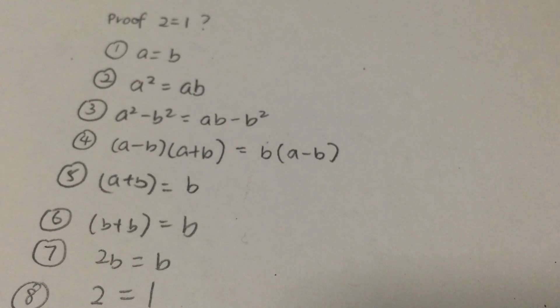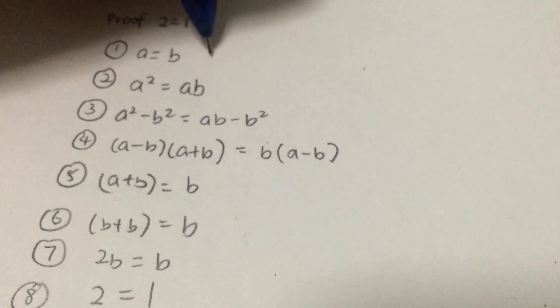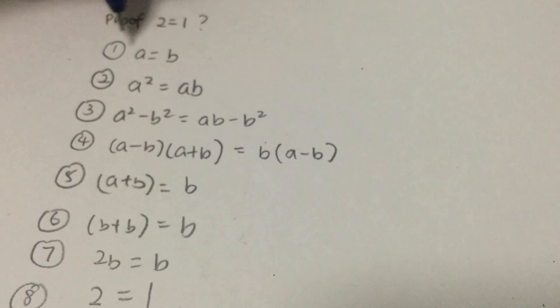Alright, the problem of this proof is that it is actually a fallacy because we know that a equals to b. We know that step number 1, a is equals to b.